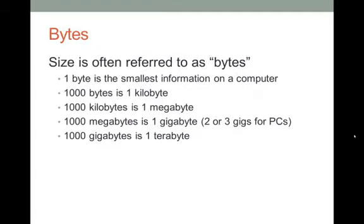Speaking of numbers, we talk about them in bytes. One byte is the smallest unit of information on a computer. A thousand bytes is one kilobyte. A thousand kilobytes is one megabyte. A thousand megabytes is one gigabyte. Generally, personal computers are referred to in gigs — two or three gigs. One thousand gigabytes is a terabyte, which is very large.